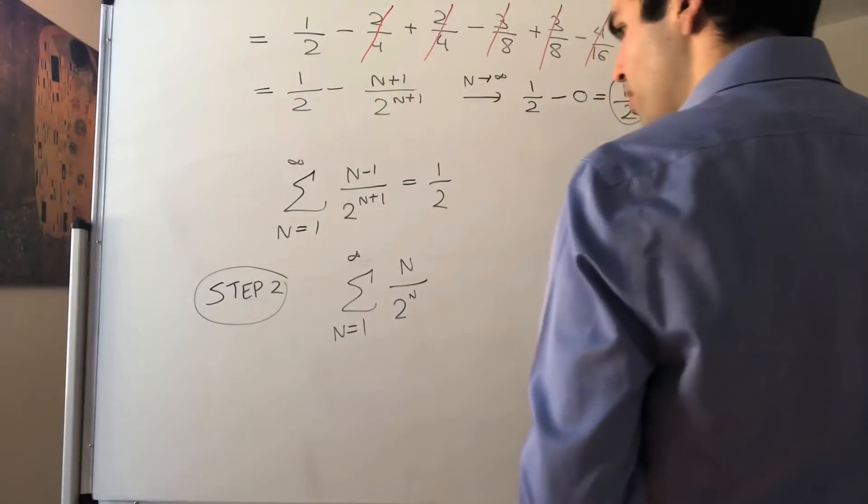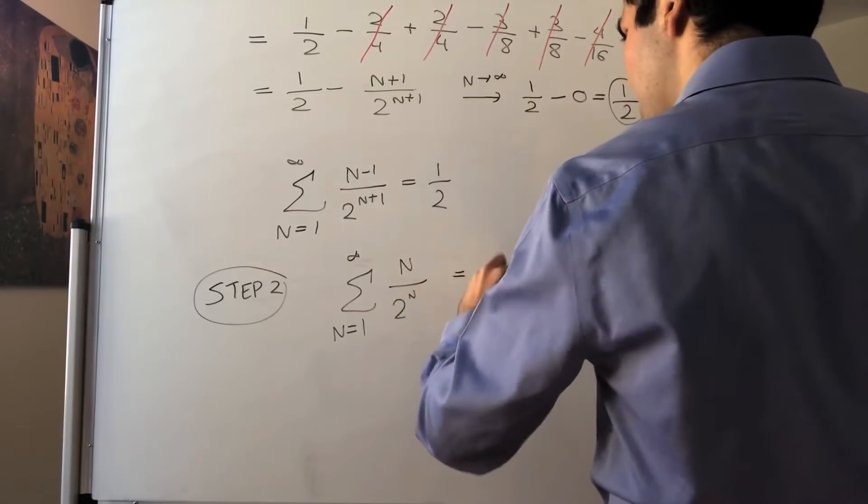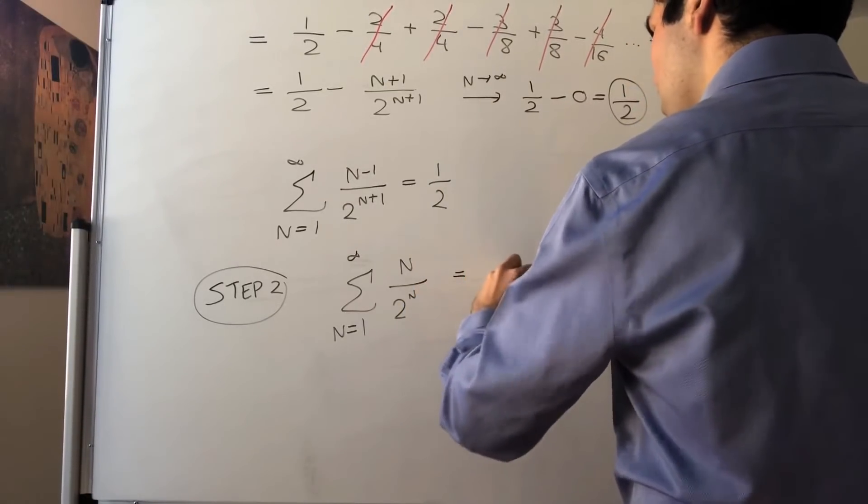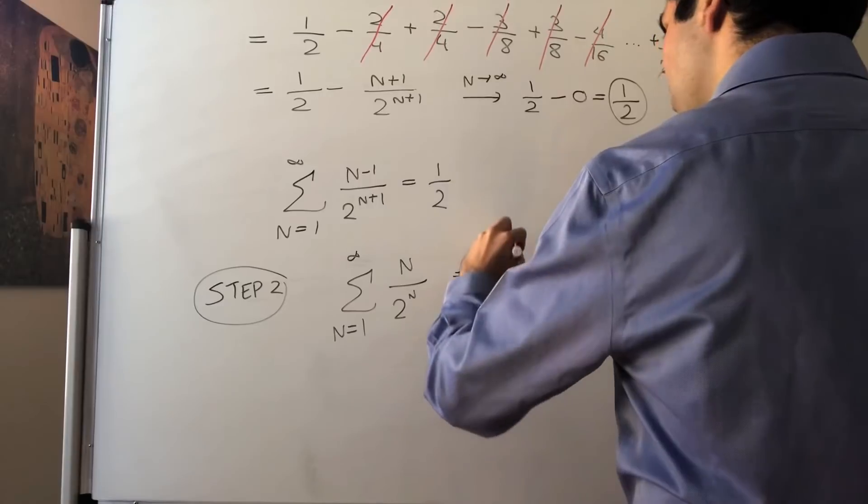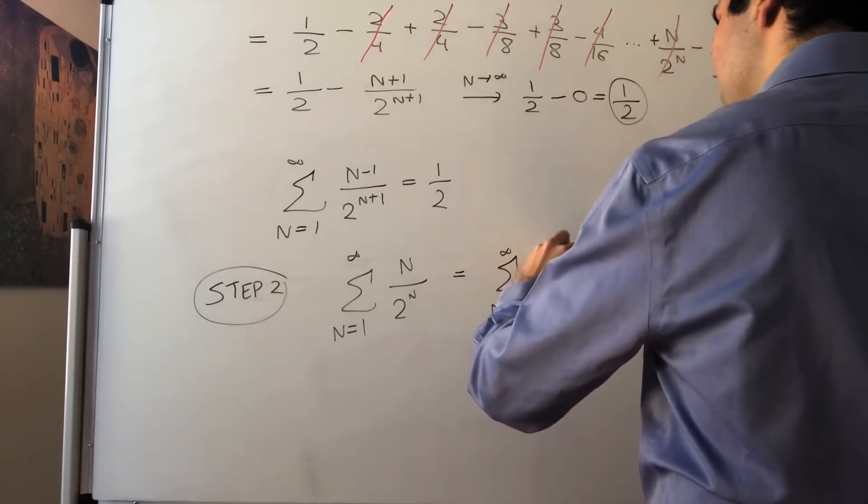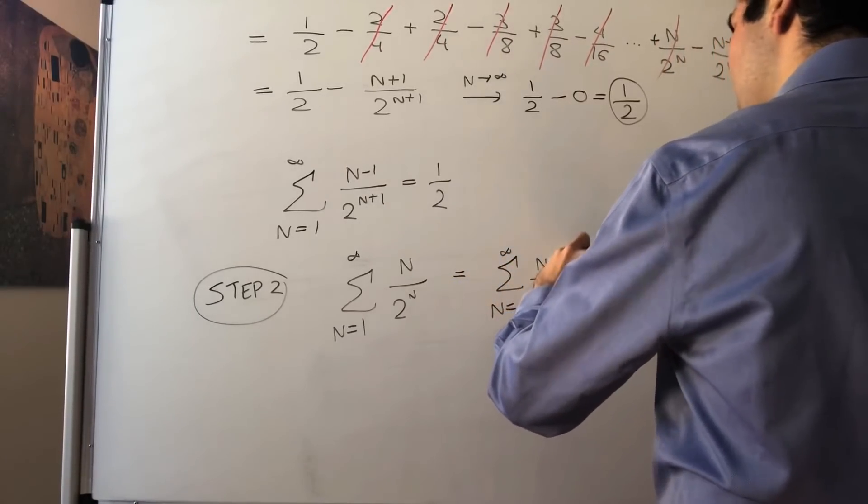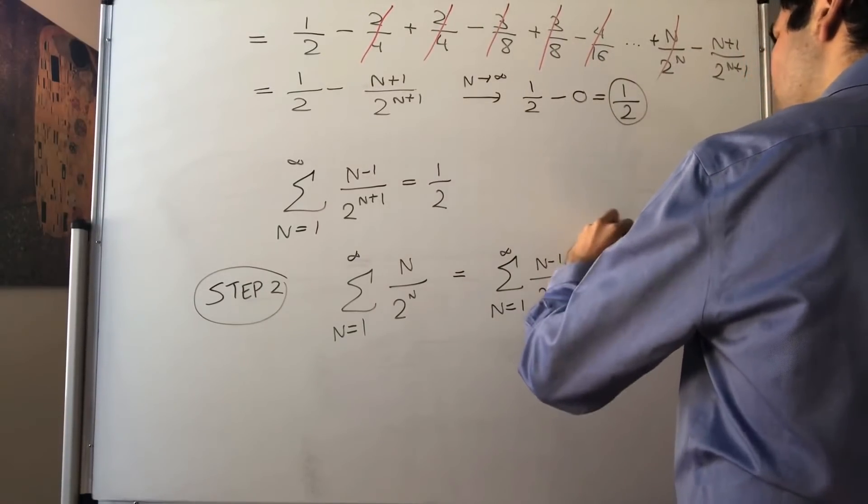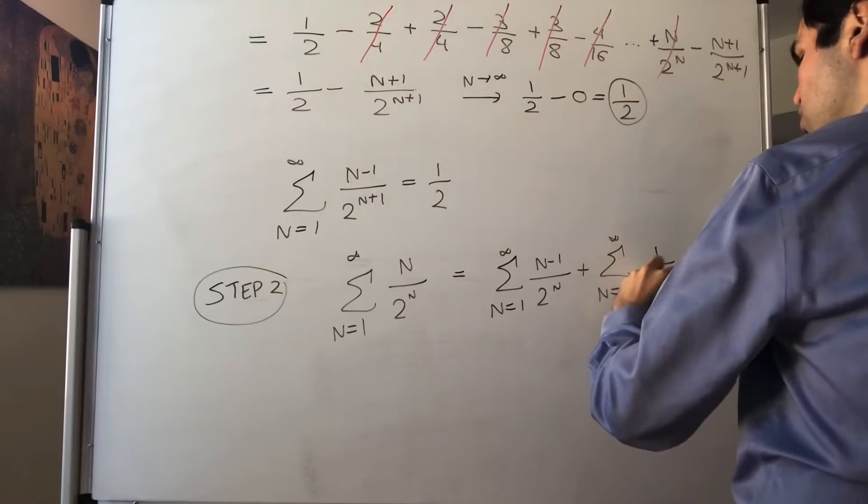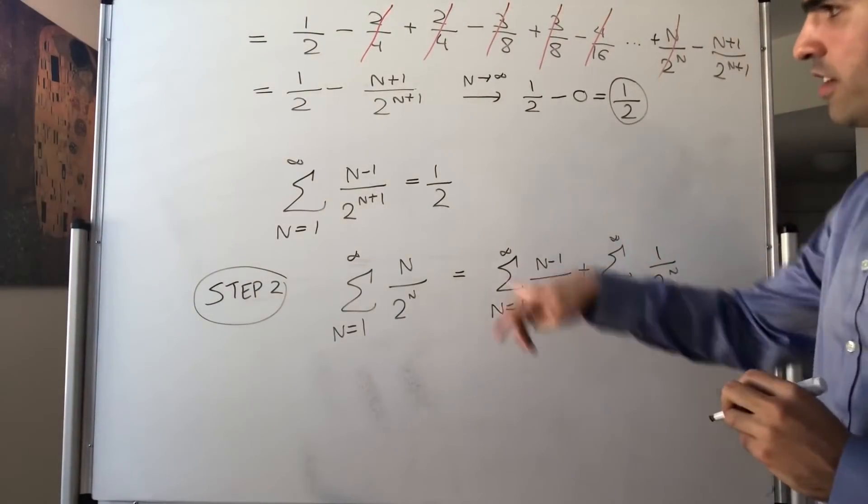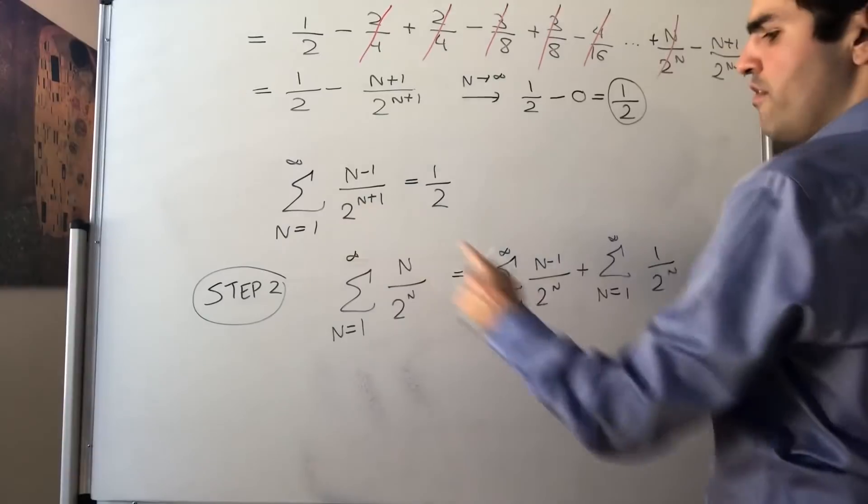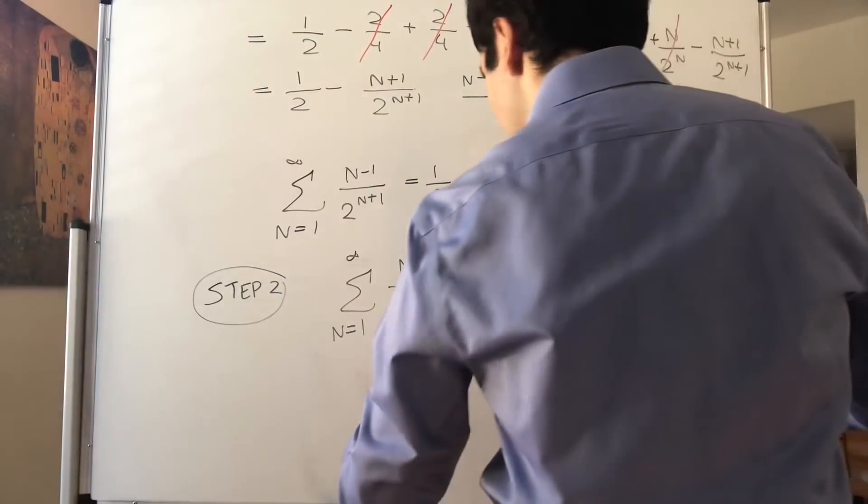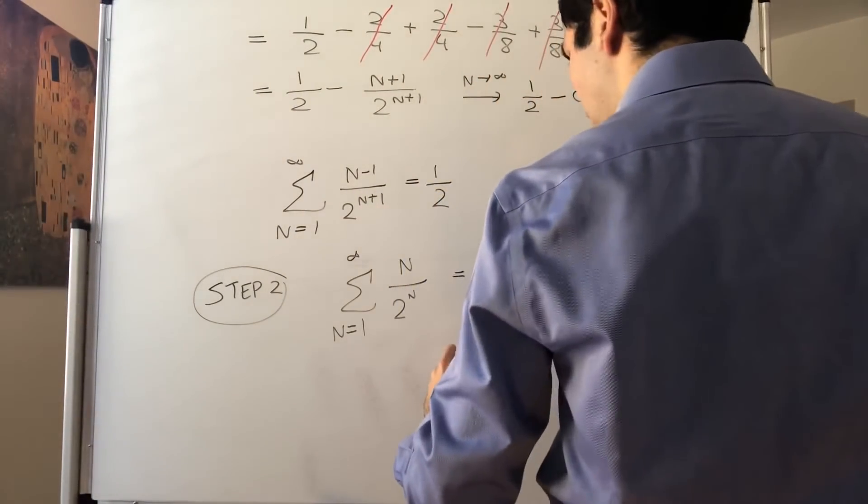But then, what does that become? Well, that's the same thing as the sum from n from 1 to infinity of n minus 1 over 2 to the n plus the sum from n from 1 to infinity of 1 over 2 to the n. Now, how does that relate to this sum? Notice the only difference here, we have an n plus 1, whereas here we have an n. But that's not a problem.